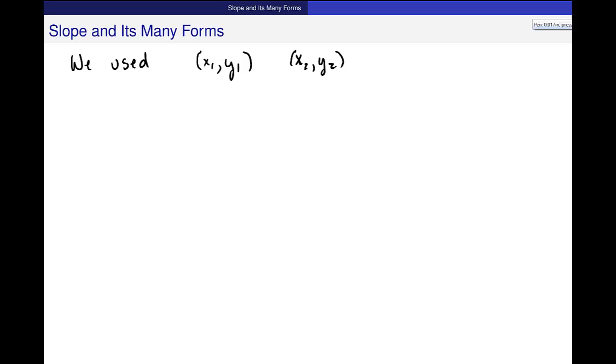And in the secant line, or in the average rate of change, I used this point a, f(a), and b, f(b). We have one more form of slope that we talk about a lot in calculus, and that's called the difference quotient.